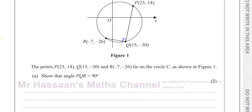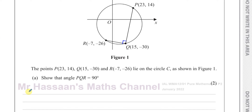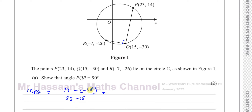So if we find the gradient of the line from P to Q, that's going to be the change in Y, which is 14 minus negative 30, over the change in X, which is 23 minus 15. That gives us 14 plus 30 which is 44, divided by 8. Since 4 goes into both, dividing both by 4 gives us 11 over 2. So the gradient of PQ is 11/2.